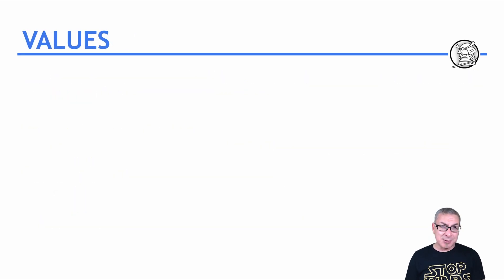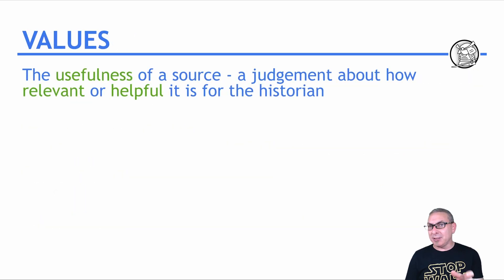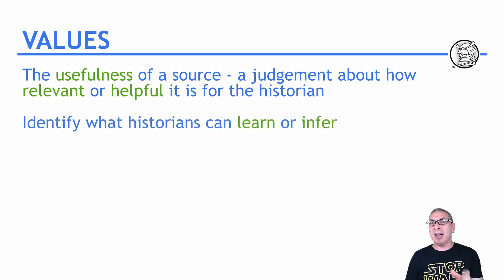The values. This is the fun part. Basically, the values in a source would be the usefulness it is to the historian to try to figure out what happened, right? So is it relevant, or is it helpful in trying to find out the truth? So you have to identify what historians might be able to learn, or at least infer from the source.